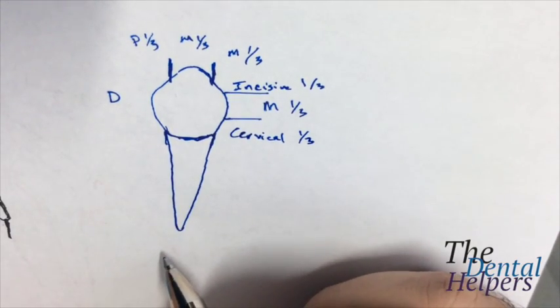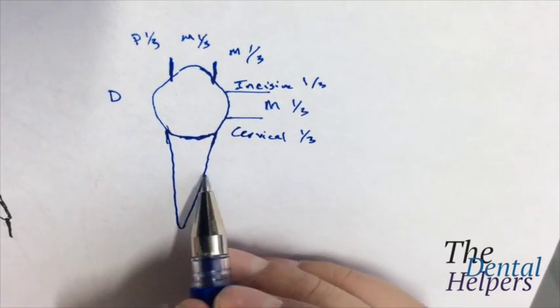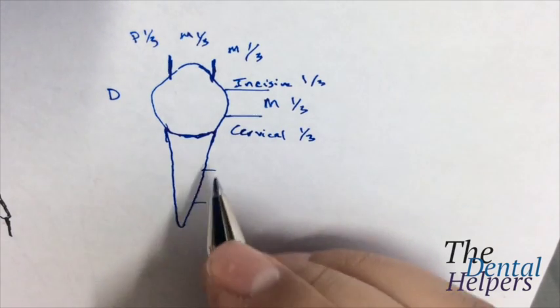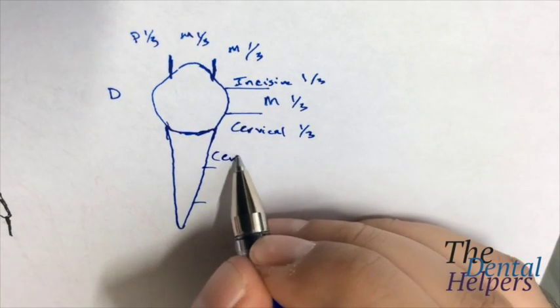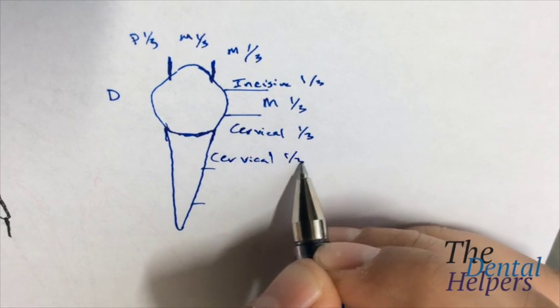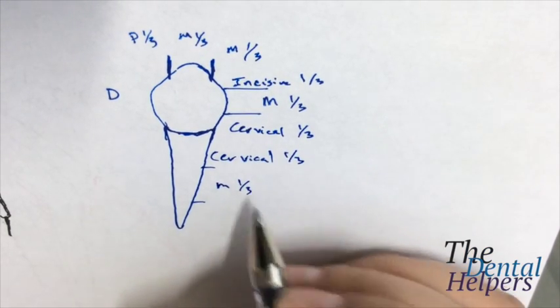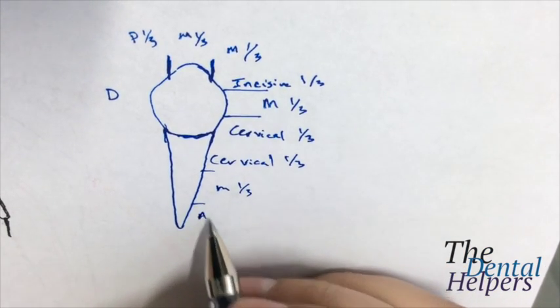And this applies to the roots as well. So the root has thirds. So this again is the cervical third, the middle, and now we have the apical.